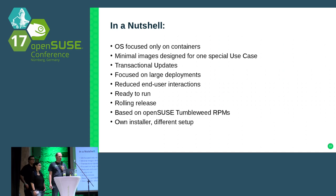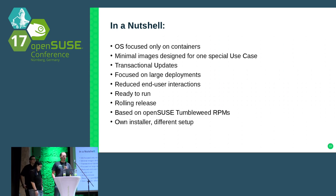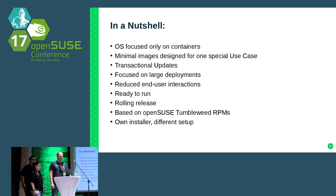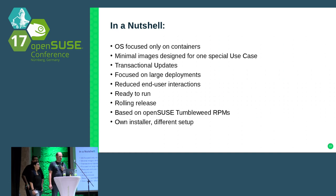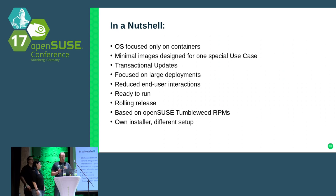The whole thing should be ready to run — you install it, you have a web dashboard and can start working without needing to set up and configure a whole Kubernetes cluster. Updates will be delivered as rolling releases, fitting perfectly with Tumbleweed. OpenSUSE Kubic is based on SUSE Tumbleweed RPMs, so every time we release an OpenSUSE Tumbleweed snapshot, we will also release an OpenSUSE Kubic snapshot. We have our own installer — just a one-page installer.